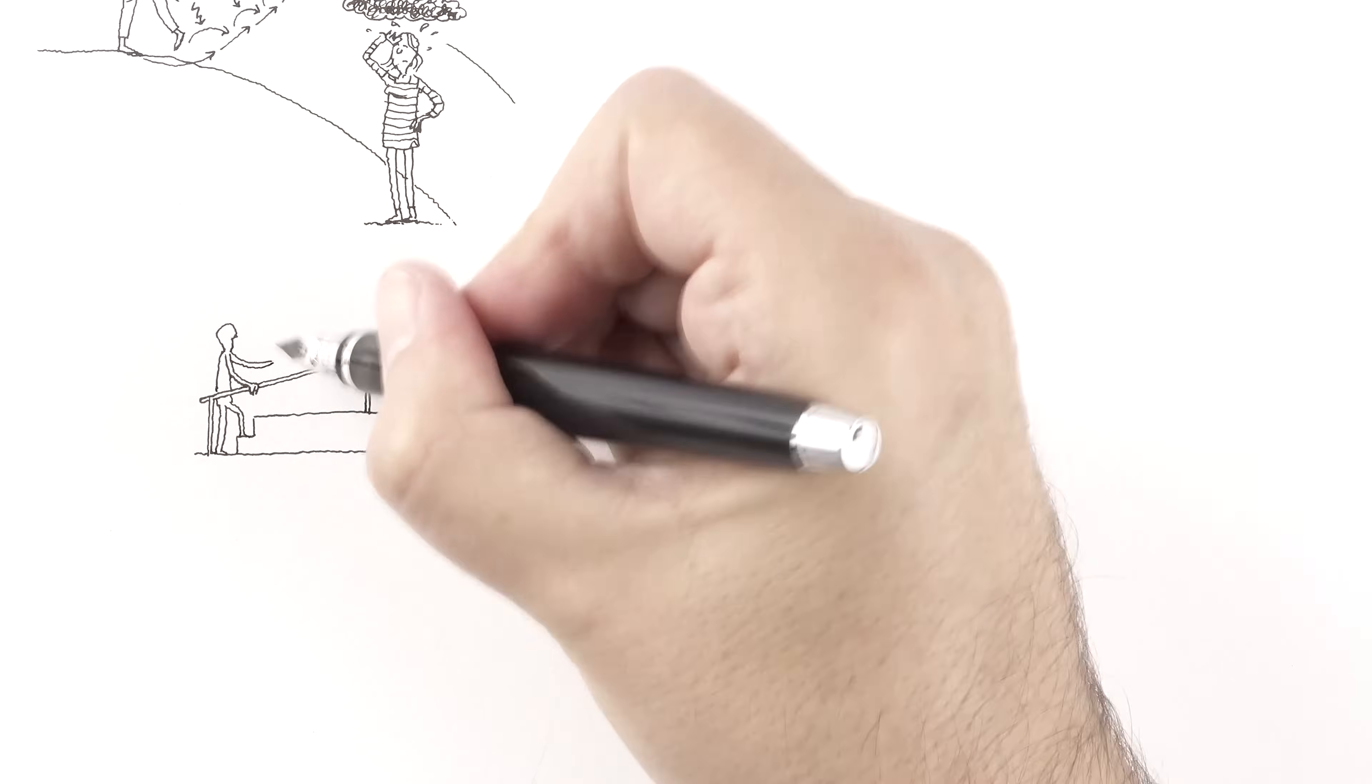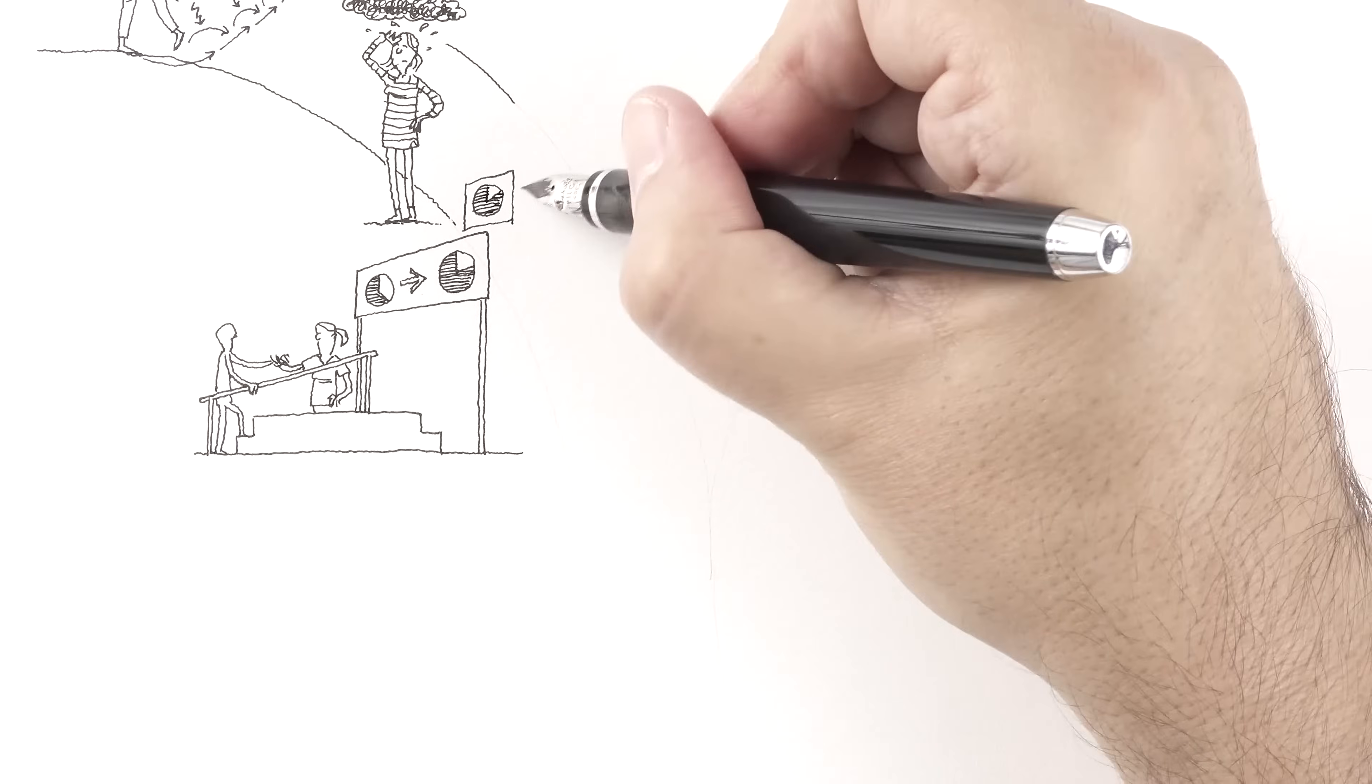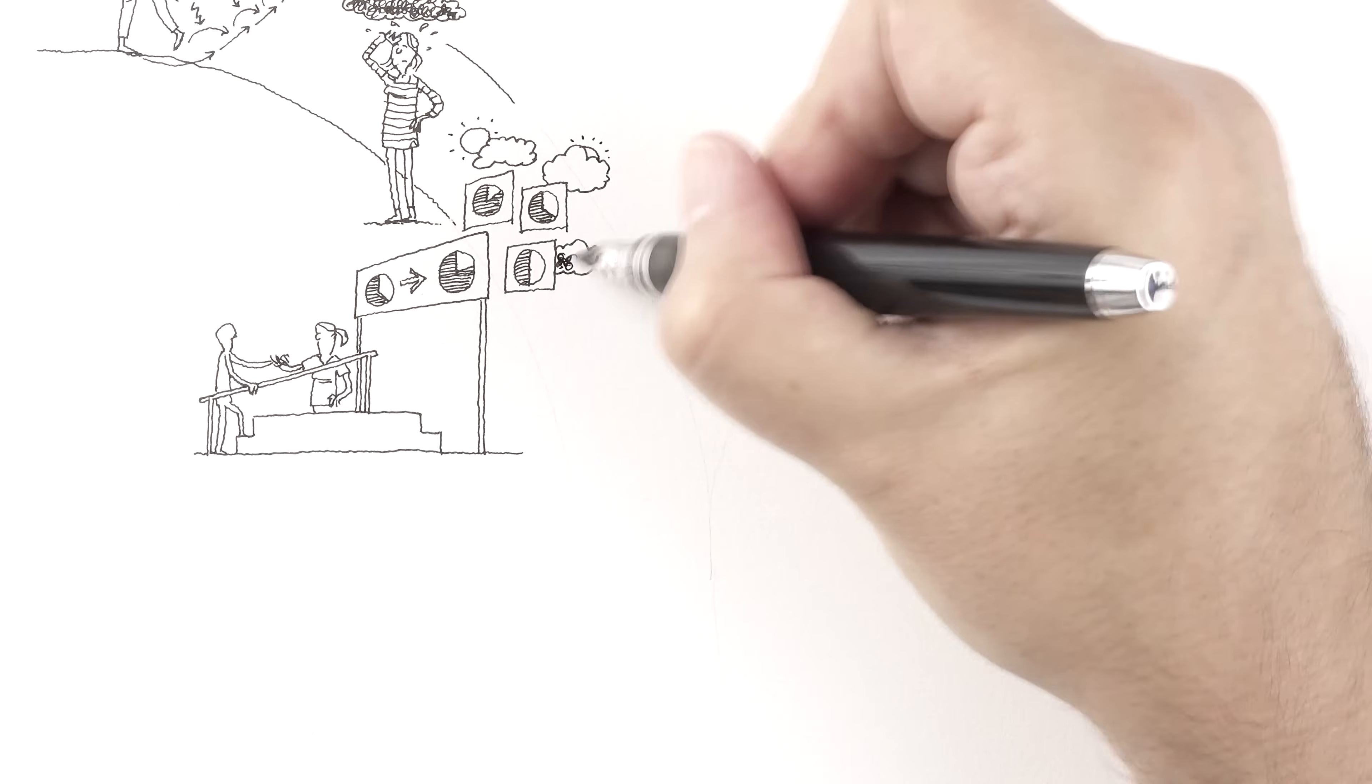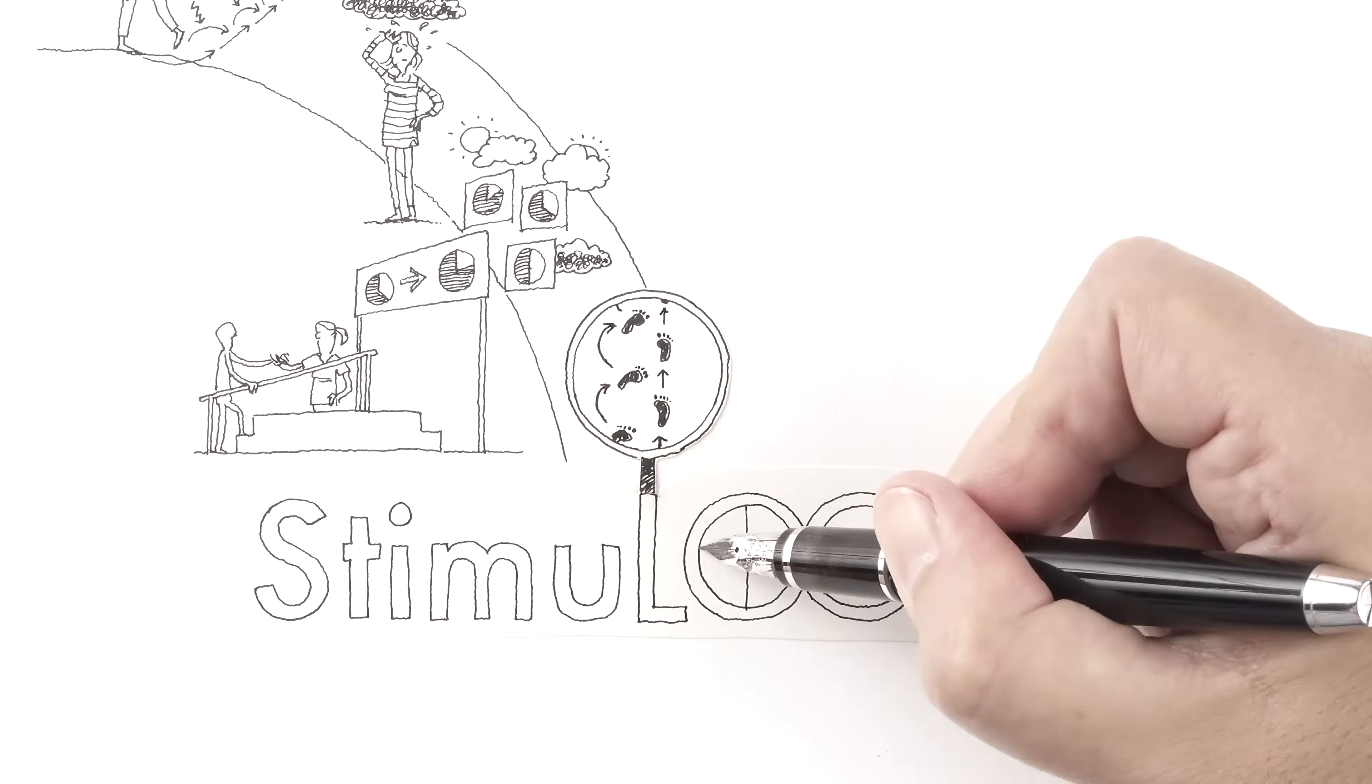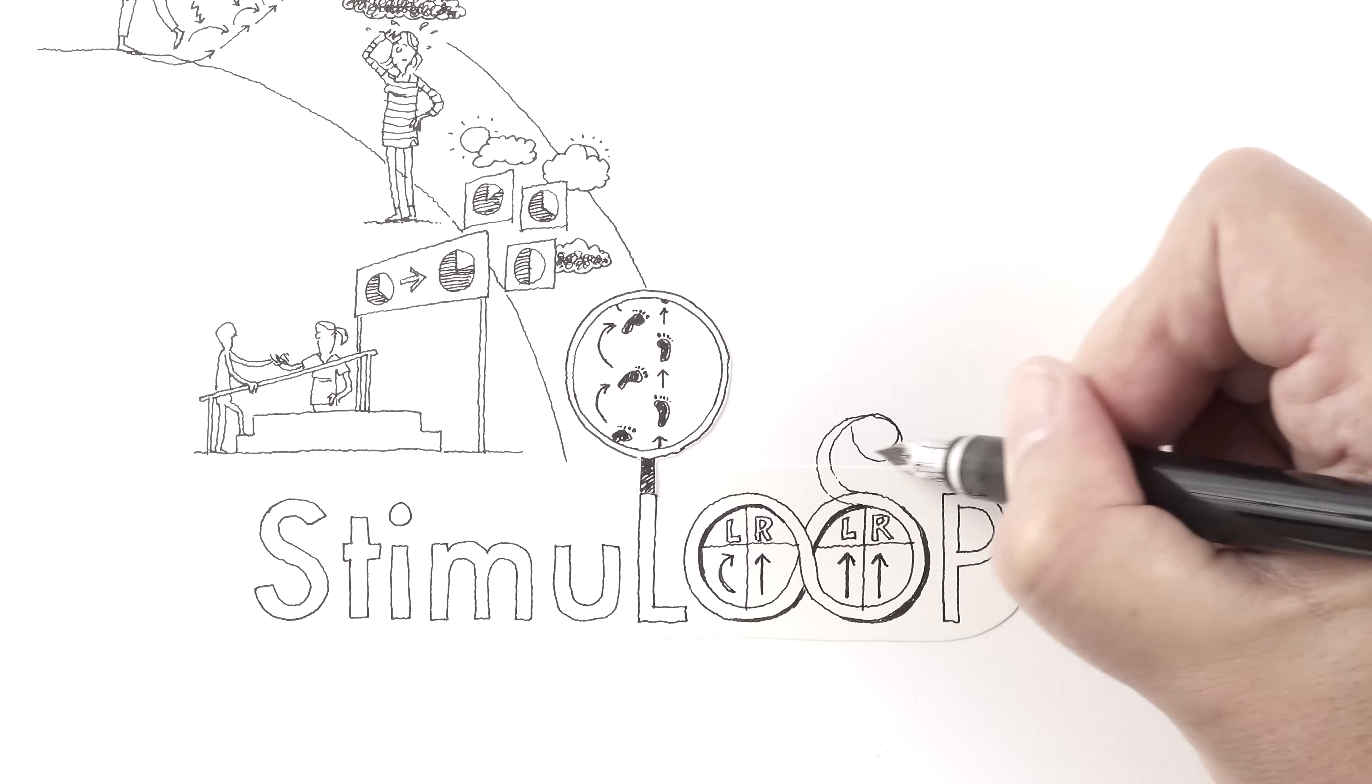Neurorehabilitation for stroke and Parkinson's disease aims to regain impaired functions. However, the effectiveness of therapy varies greatly between individuals and often does not lead to the desired improvement in quality of life. The Stimuloop project focuses on impaired gait behaviour in these patients and develops new personalised methods in neurorehabilitation to improve walking, sustainably so.